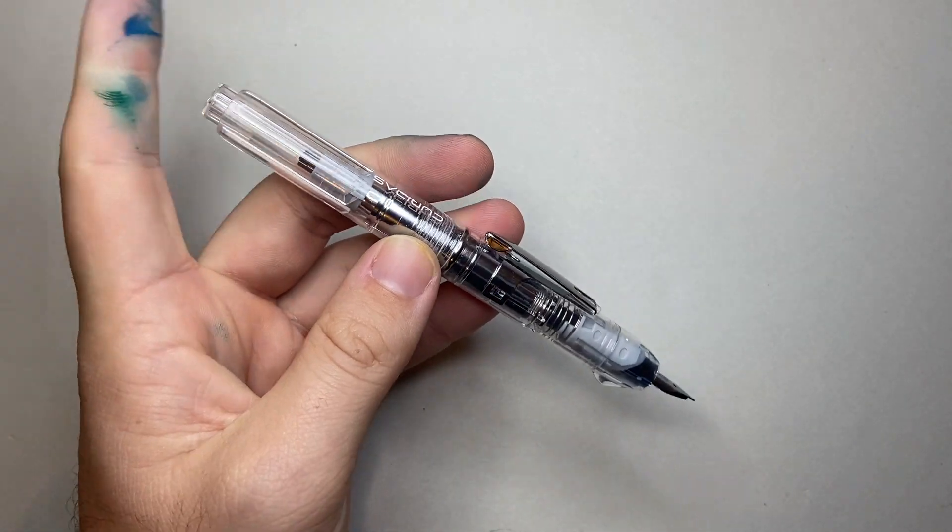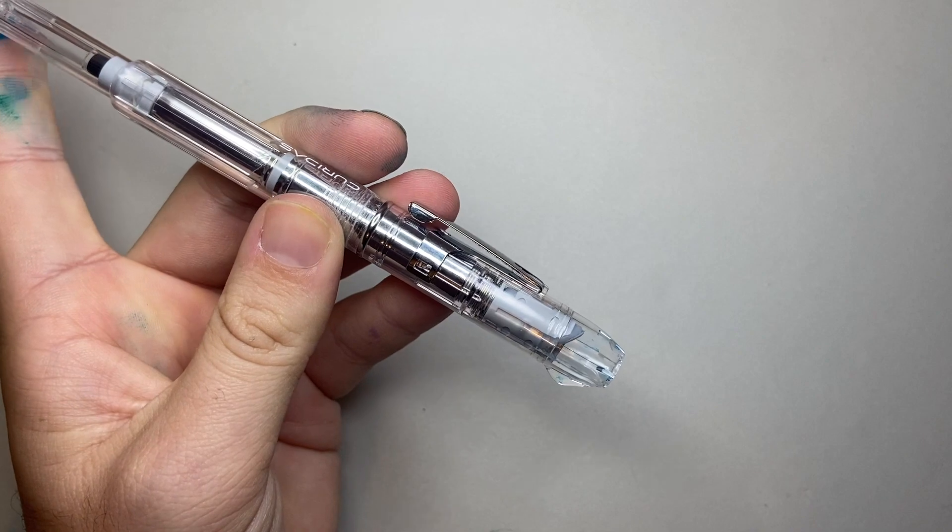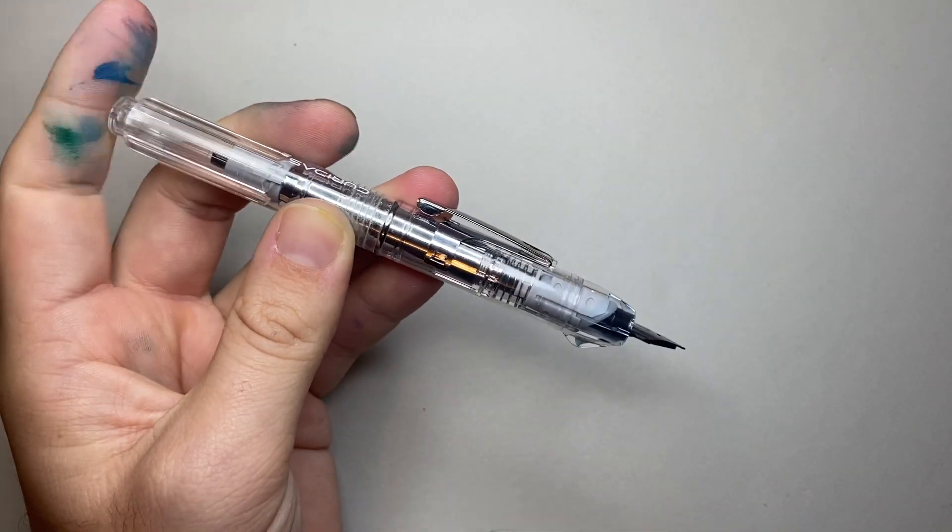But a retractable fountain pen is retractable. So you click the button on the end there, the knock on the end, and then it comes out the front. It's very cool. And then it retracts back in and it does everything it's supposed to do.